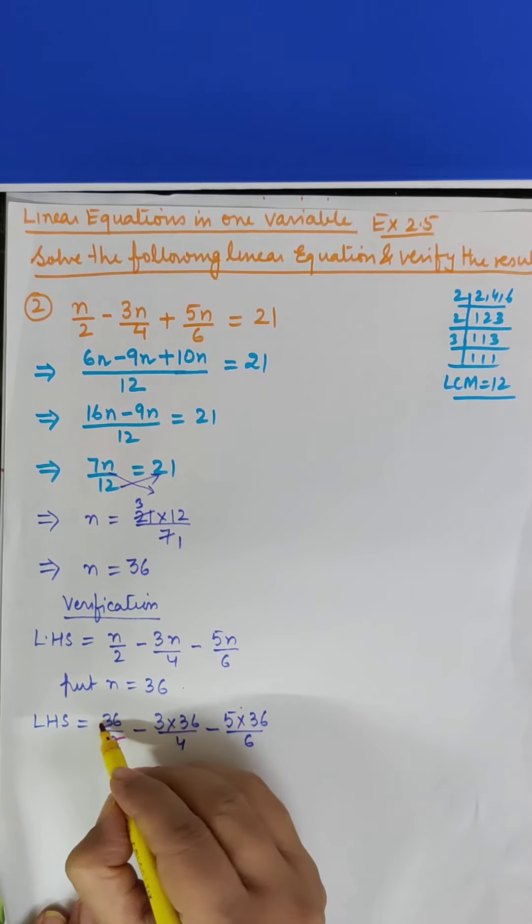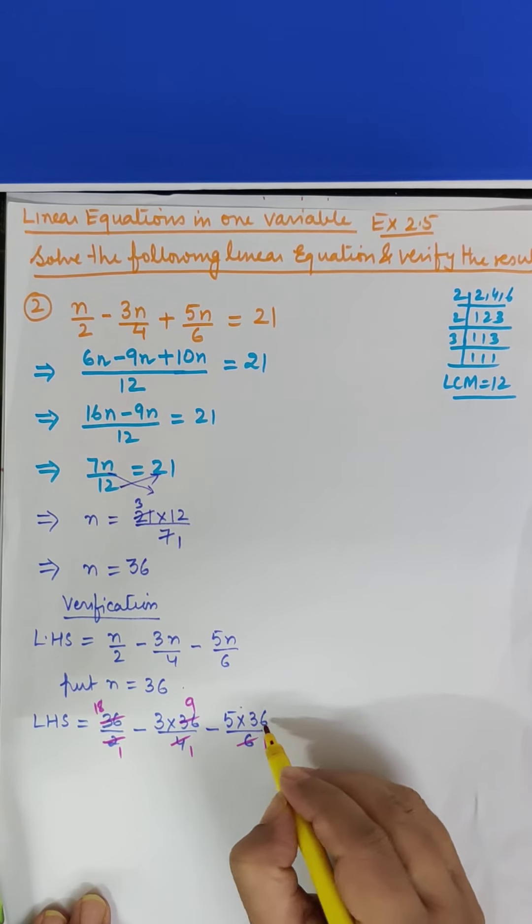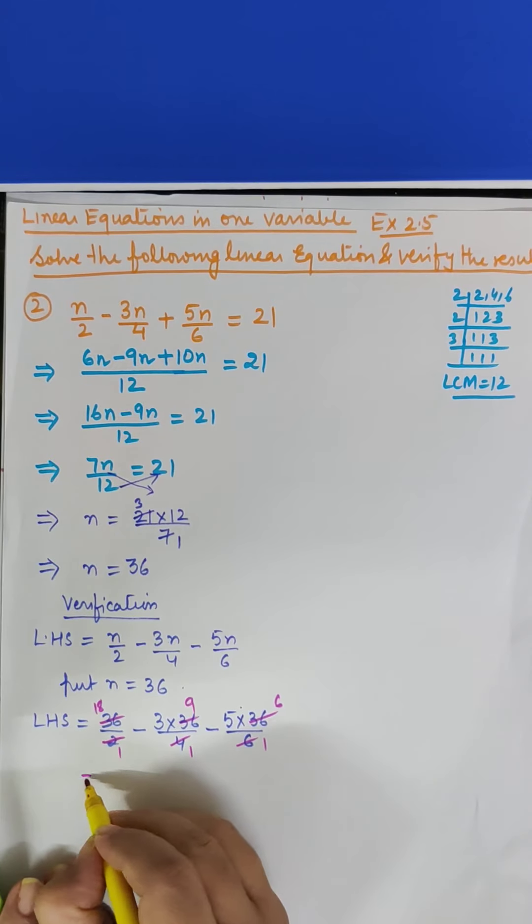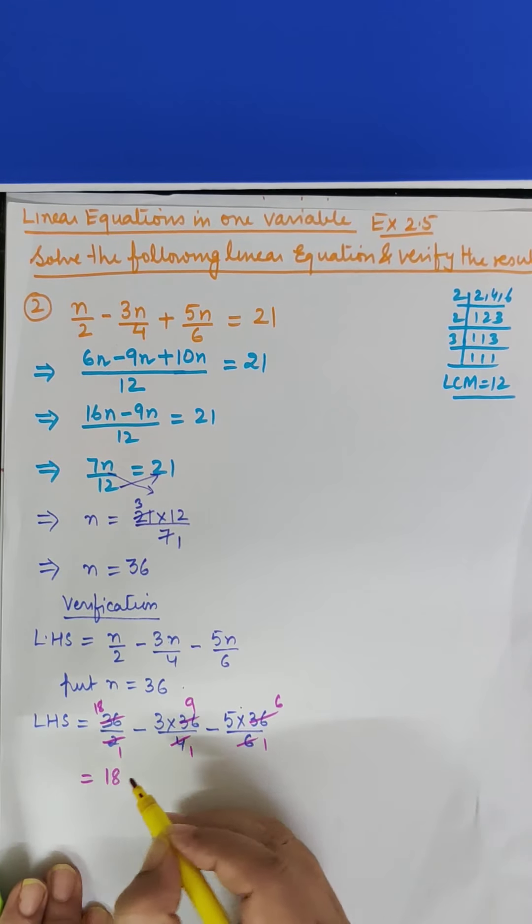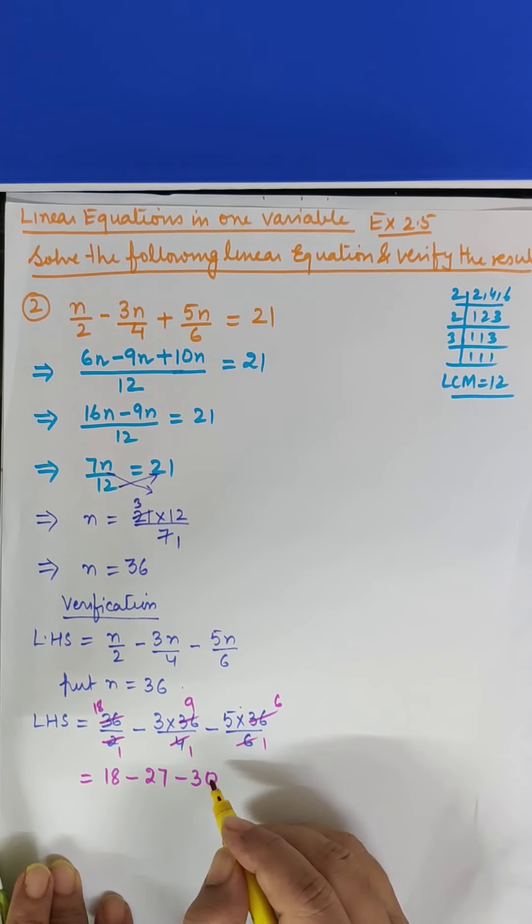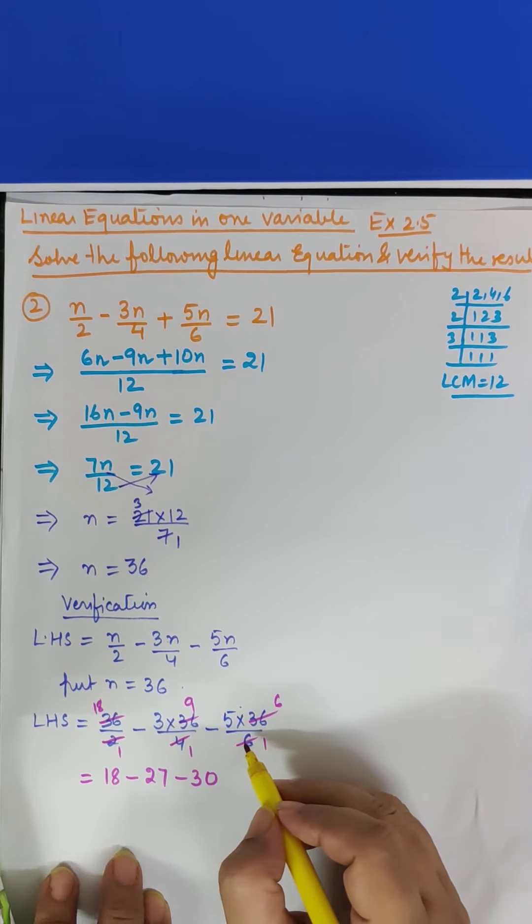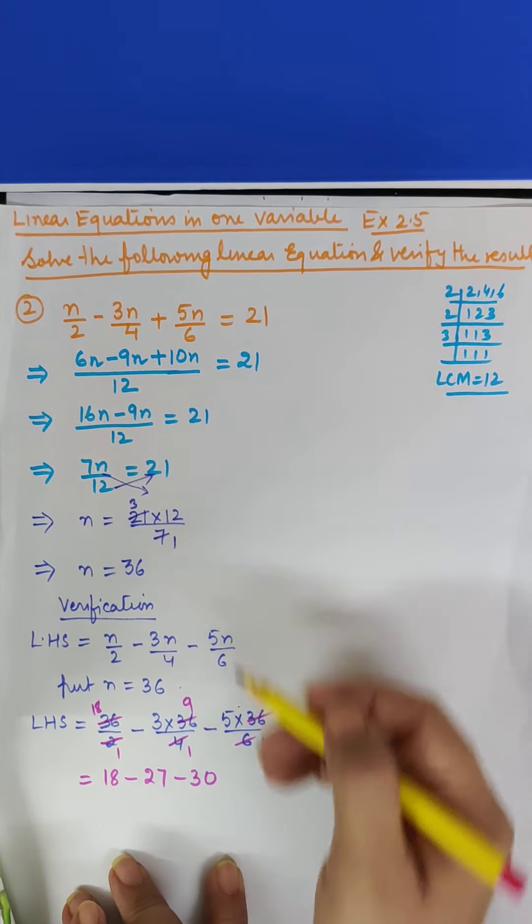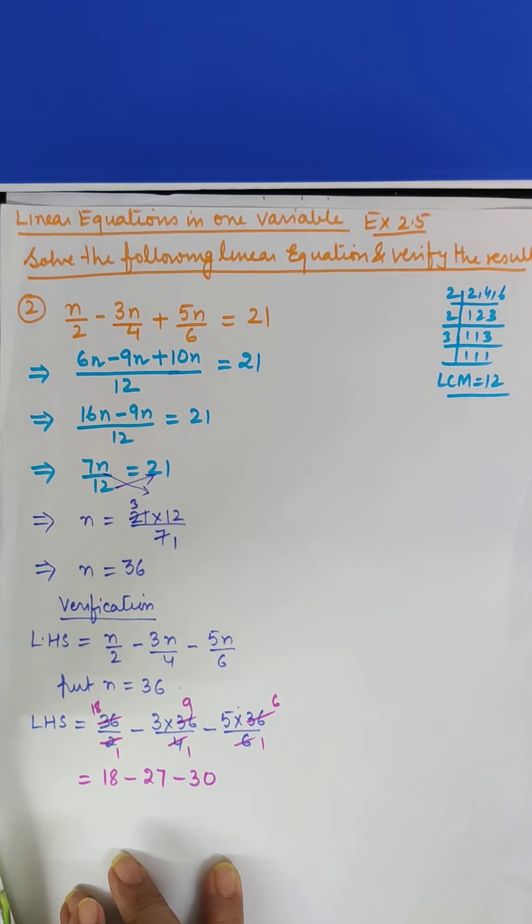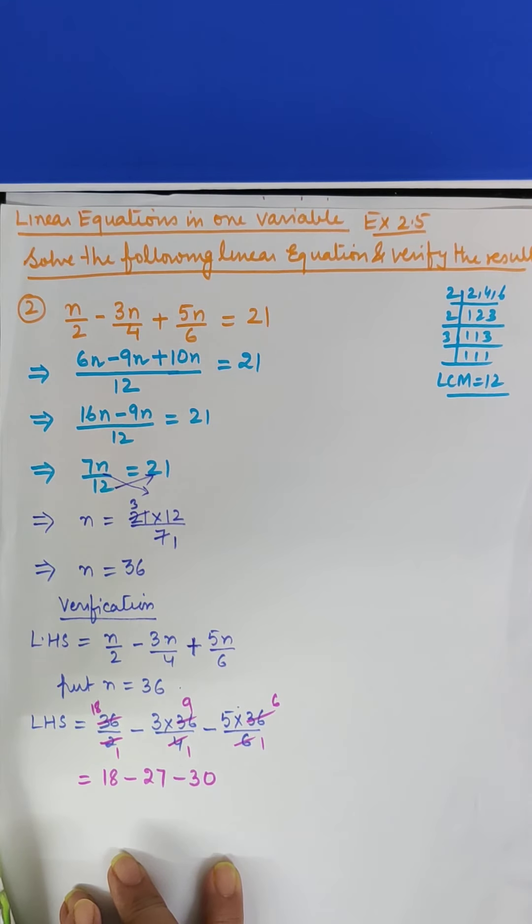Look here, 2 ones are 2, 2 eighteens are 36. 4 ones are 4, 4 nines are 36. 6 ones are 6, 6 sixes are 36. So what do we have? Here 18, here 9, 3 times is 27, here 30. There's a mistake here. Here it should be, look what it is, this is plus 5N upon 6. Here it's minus. Here it will change right.